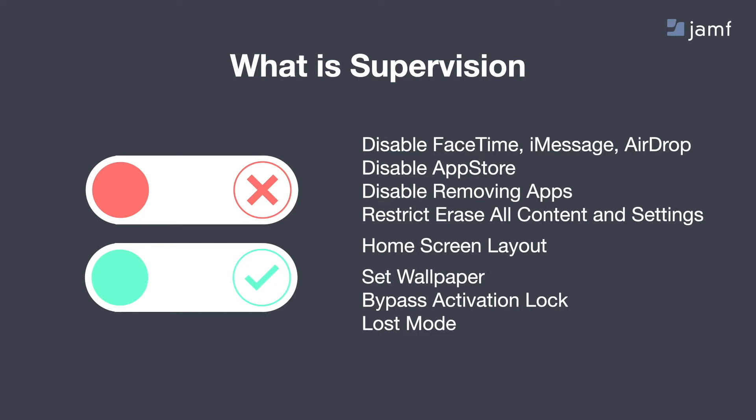Here are some examples of configurations available on iOS devices when supervision is enabled. For example, the ability to disable FaceTime, iMessage, and AirDrop. Disabling the App Store so you, the admin, can define what apps are on the device, or opening up Self-Service which I'll get into in a moment. Disabling and removing apps, which is extremely useful when dealing with younger students who may accidentally delete an application. Or restricting the Erase All Content and Settings feature to stop end users from doing a factory wipe. Setting a home screen layout, and remote commands like Wallpaper, Bypass Activation Lock, and Loss Mode if you're ever in the scenario of an iPad going walkabouts.